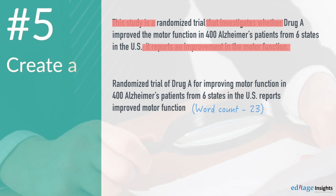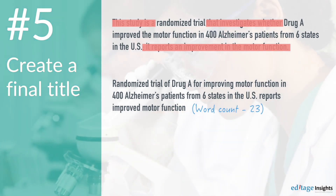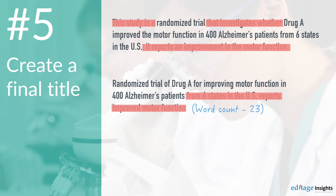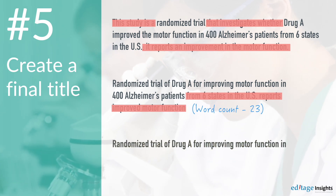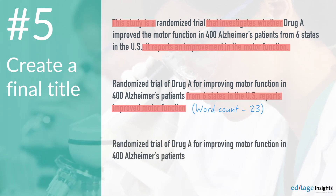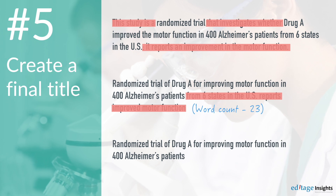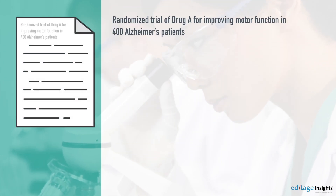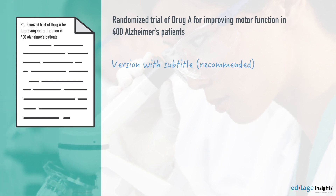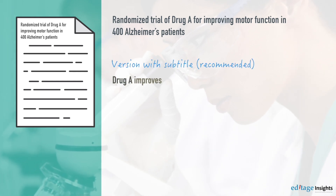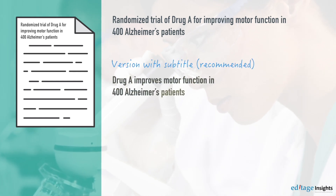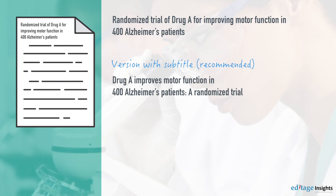Step 5: Create a final title. Start polishing — delete information that is not essential. Result: Randomized trial of Drug A for improving motor function in 400 Alzheimer's patients. There, you have a title for your research paper. You could also add a subtitle to this version: Drug A improves motor function in 400 Alzheimer's patients: A randomized trial.